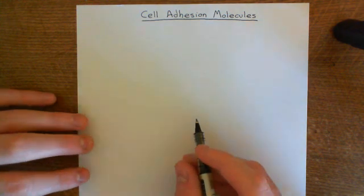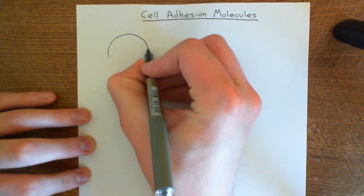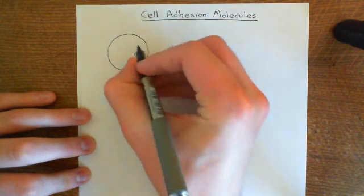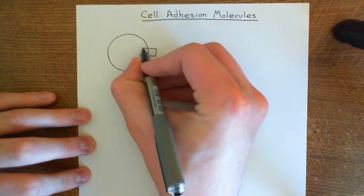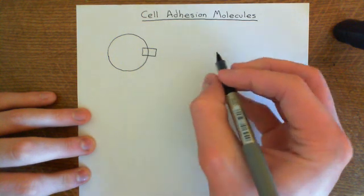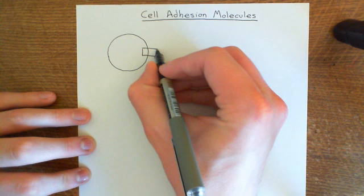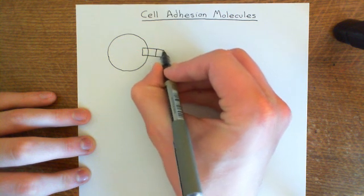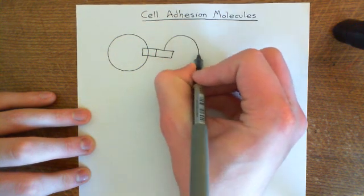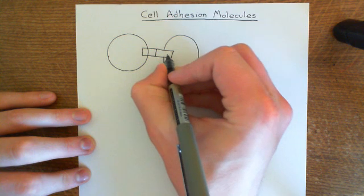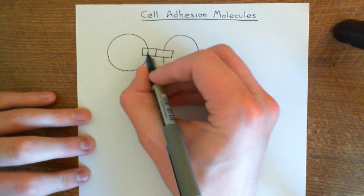Let's start off with the very basics. If we have a cell here — so this is the cell membrane — then basically it can have a cell adhesion molecule, which I'm going to draw very crudely, just as a box. This cell adhesion molecule can either attach to another cell adhesion molecule on a different cell.